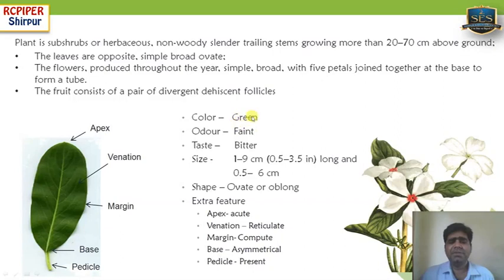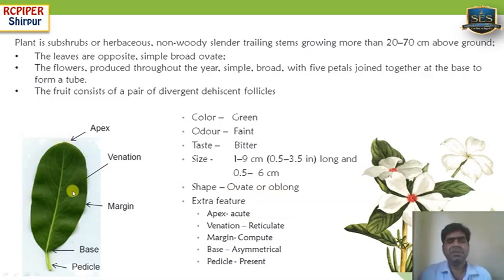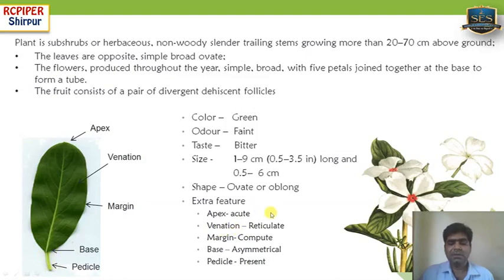Being a leaf-category drug, it shows green color, faint odor, and bitter taste. Depending upon geographical and climatic zone, it shows varying size. The shape is ovate, oblong. The extra features: the apex shows an acute apex; venation is reticulate, meaning it forms a network of veins — all veins emerging from the central midrib and forming a network. The base is asymmetrical, and there is presence of a petiole.